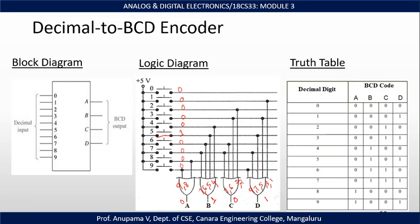Now we will see the truth table of the decimal to BCD encoder. The inputs are represented as decimal digits 0 through 9, and the corresponding BCD output (A, B, C, D) is generated for each decimal digit. For example, decimal 9 maps to BCD 1001, and the remaining entries follow standard decimal-to-BCD conversion.